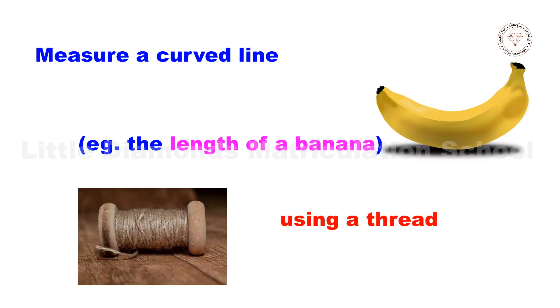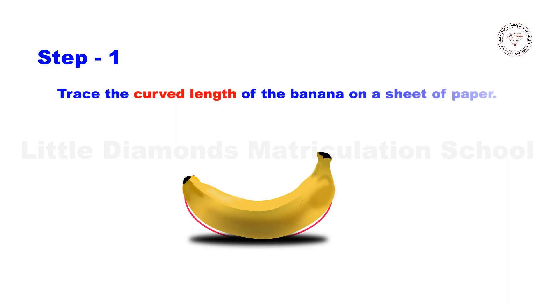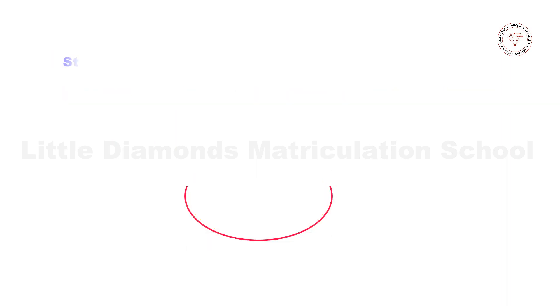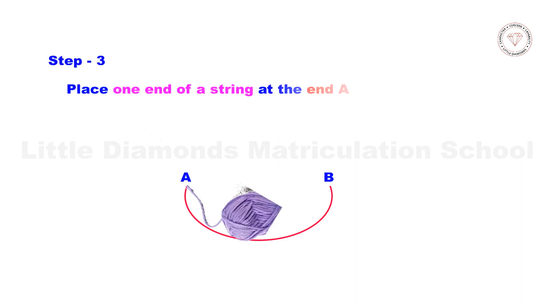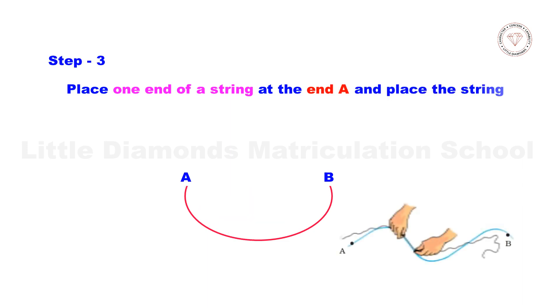Using a thread: Step 1 - trace the curved length of the banana on a sheet of paper. Step 2 - mark one end as A and the other end as B. Step 3 - place one end of a string at the end A and place the string along the curved line up to the end B such that the string covers every bit of the curved line.